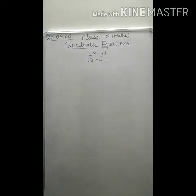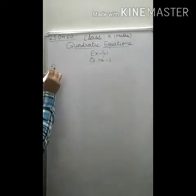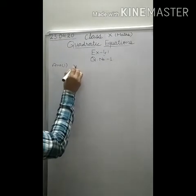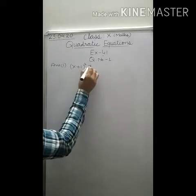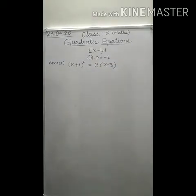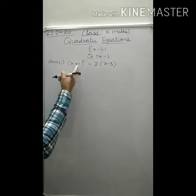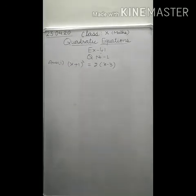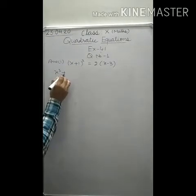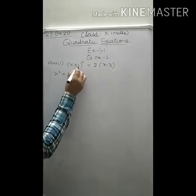In the first part, we are given: (X + 1)² = 2(X − 3). We have to check, after solving, whether it is a quadratic equation or not. Here, we use the identity (A + B)² = A² + 2AB + B². So this can be written as X² + 2·X·1 + 1², which gives X² + 2X + 1. On the right side, 2(X − 3) gives 2X − 6.